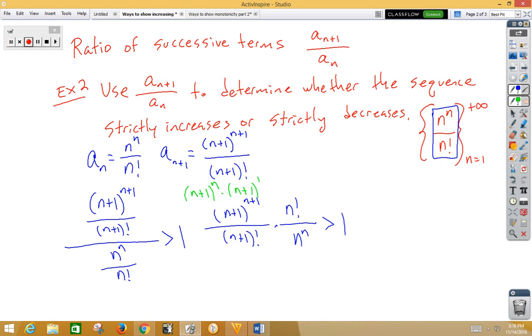On the bottom left, we can rewrite this as n plus 1 times n factorial. Now let's see what happens. We can cancel out an n factorial. We can cancel out an n plus 1.